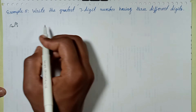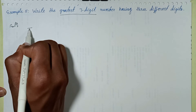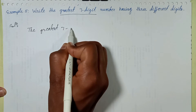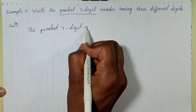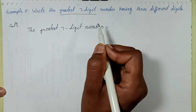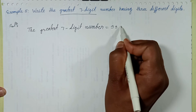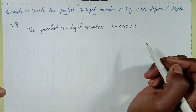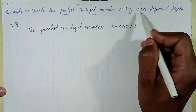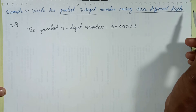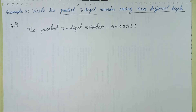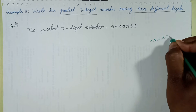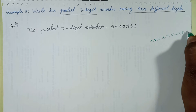First of all, write the greatest seven digit number. The greatest seven digit number is nine written seven times — 9999999. This is the greatest seven digit number. Now, there must be three different digits. There are total ten digits: zero, one, two, three, four, five, six, seven, eight, and nine.